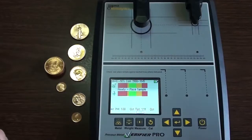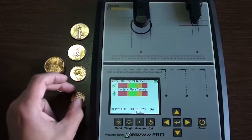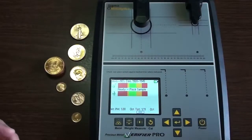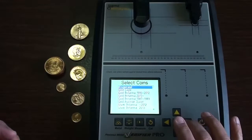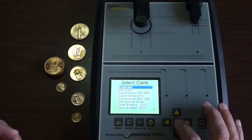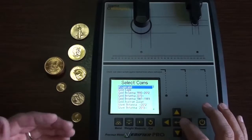But I wanted to run through some of the gold coins that I have. Chinese Panda, the Maple, the American Eagle, the Sovereign, and just kind of run through these on the verifier here, just to give you an idea of how great this tool is and how it can really benefit you if you're stacking gold and or silver.